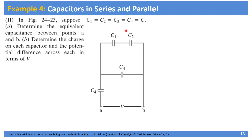In this problem, what we have is four capacitors that are connected to each other, and apparently the capacitance of these four capacitors are equal to each other with a value C. It is asking us to calculate the equivalent capacitance between points A and B, as well as the charge and voltage on each capacitor if the potential difference between points A and B is V.